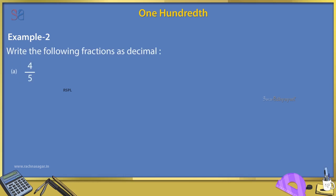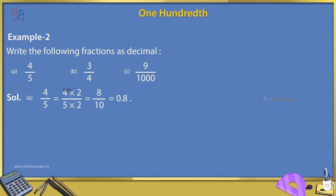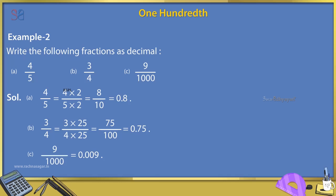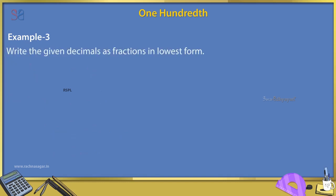Example 2: Write the following fractions as decimals. A. 4/5. B. 3/4. C. 9/1000. Solution: A. 4/5 = (4×2)/(5×2) = 8/10 = 0.8. B. 3/4 = (3×25)/(4×25) = 75/100 = 0.75. C. 9/1000 = 0.009.